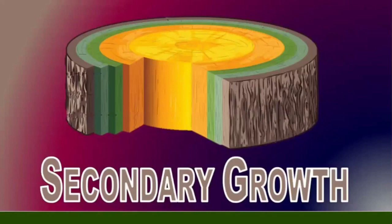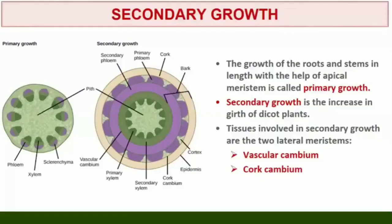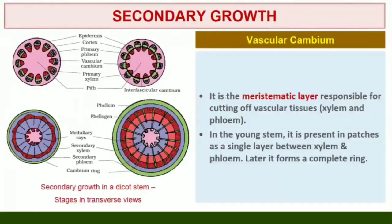6.4 Secondary Growth. The growth of roots and stems in length with the help of apical meristem is called primary growth. Apart from primary growth, most dicotyledonous plants exhibit an increase in girth. This increase is called secondary growth. The tissues involved in secondary growth are the two lateral meristems: vascular cambium and cork cambium. The meristematic layer responsible for cutting off vascular tissues — xylem and phloem — is called vascular cambium.